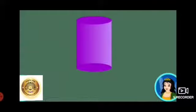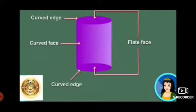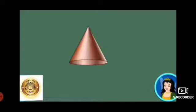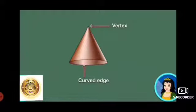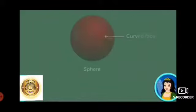Look at this shape — it is like a can or a drum. It is a cylinder. It has three faces: two flat and one curved. It also has two curved edges and zero corners. This is a cone. It has two faces — one flat and one curved. It has one corner or vertex, and one curved edge. We have many conical objects.